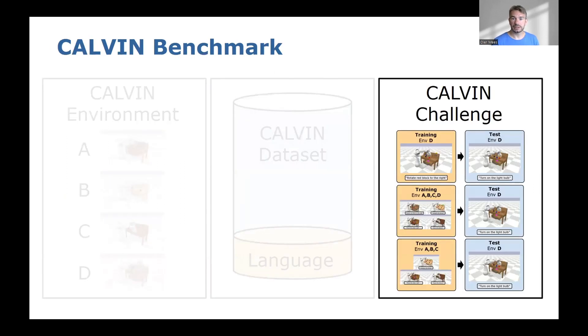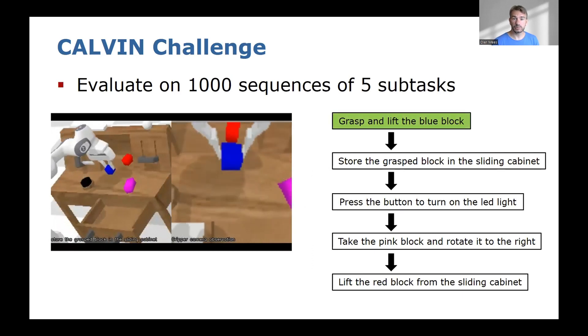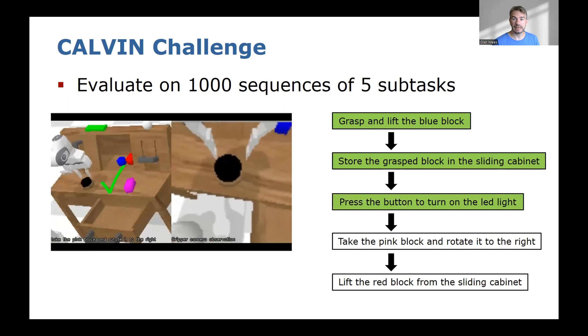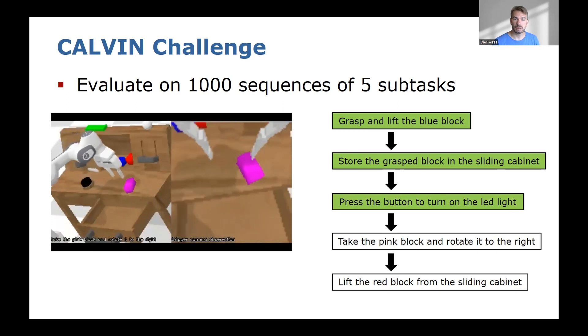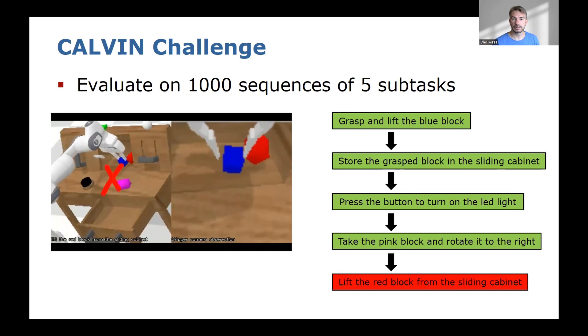Now let's talk about the CALVIN challenge, in which the agent's performance is evaluated on 1,000 sequences of five language instructions in a row. In this example, the agent successfully grasps and lifts the blue block, stores the grasped block in the sliding cabinet, presses the button to turn on the LED light, then takes the pink block and rotates it to the right, but then fails to lift the red block from the sliding cabinet.